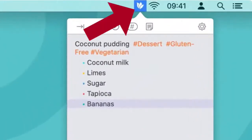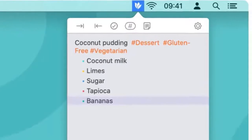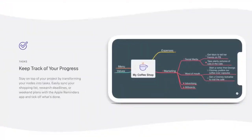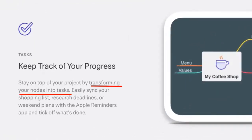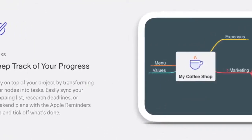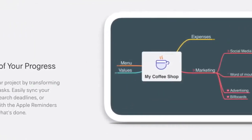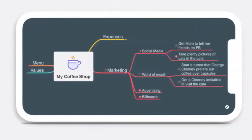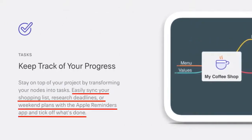The cool thing with quick entry is that you get an icon on your top bar — you just click that, open up the notes panel, and away you go. Now as MindNode is a Mac app, it integrates with Apple's Tasks app. This means you can create a mind map with tasks and actually cross those off as you go. As MindNode put it, you can easily sync your shopping lists, research deadlines, or weekend plans with the Apple Reminders app and tick off what's done.